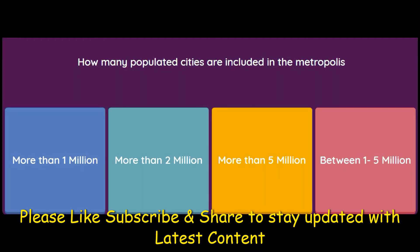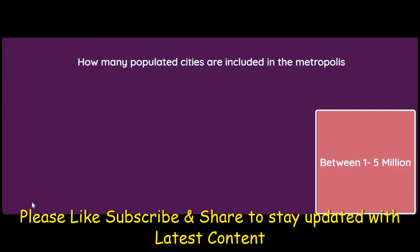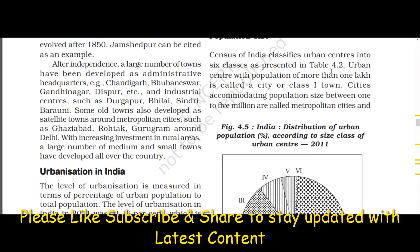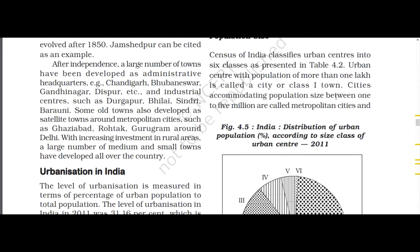How much population is included in the metropolis classification? Options: more than 1 million, more than 2 million, more than 5 million, or between 1 to 5 million. The answer is between 1 to 5 million. The book states: any urban center with more than 1 lakh population is a Class 1 town. Cities with population between 1 to 5 million are called metropolitan cities, and beyond 5 million are mega cities.